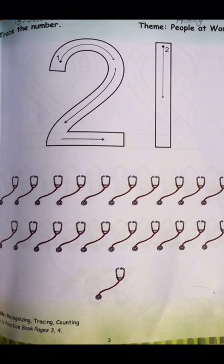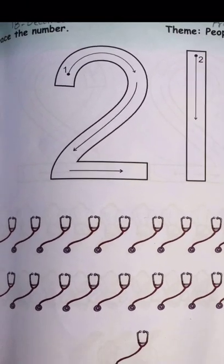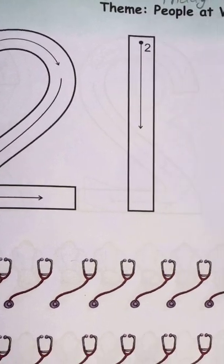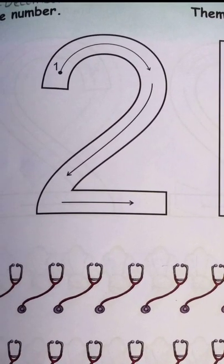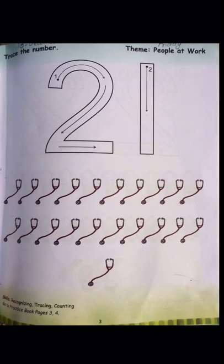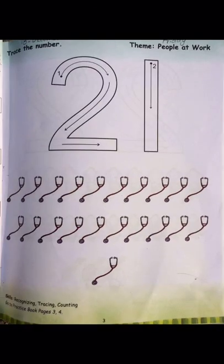This is twenty-one. Now you can see which two digits it is made of — two and one. When we write the number twenty-one, we write two and one. We do not write it any other way; we write two, one — twenty-one, okay?